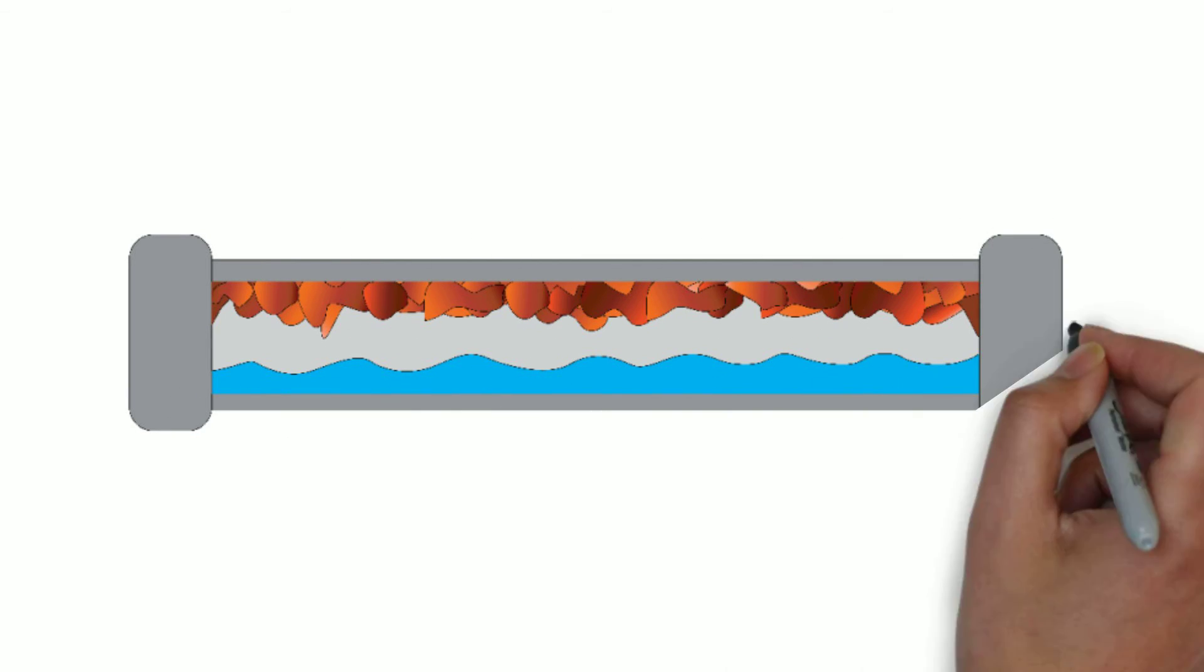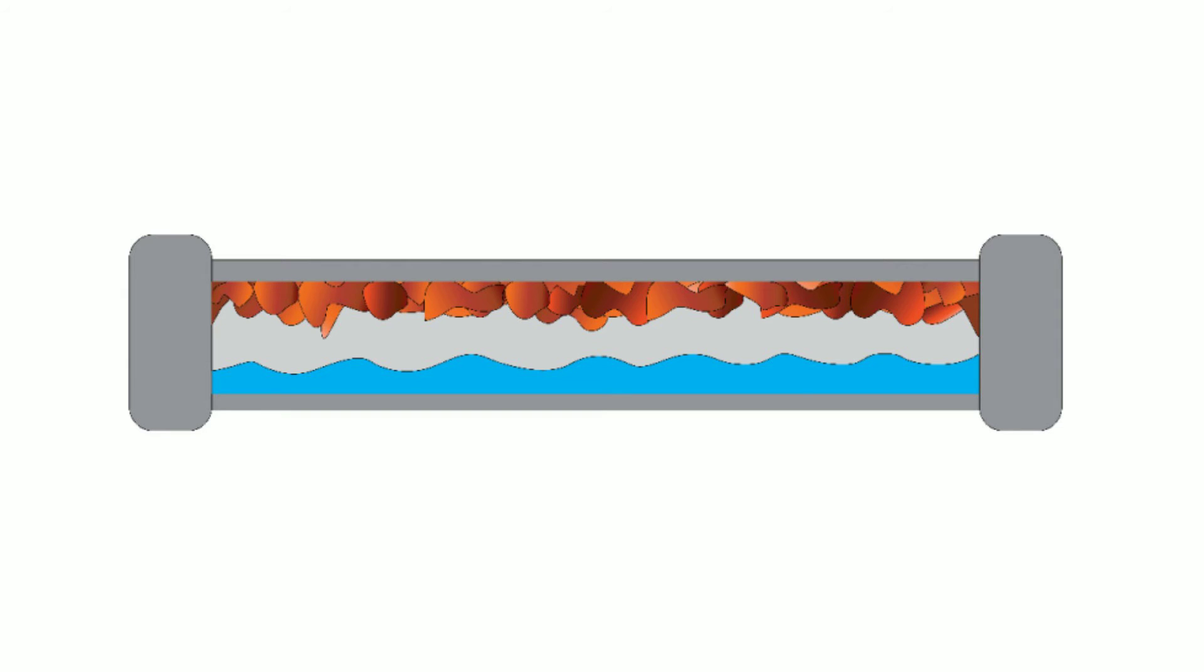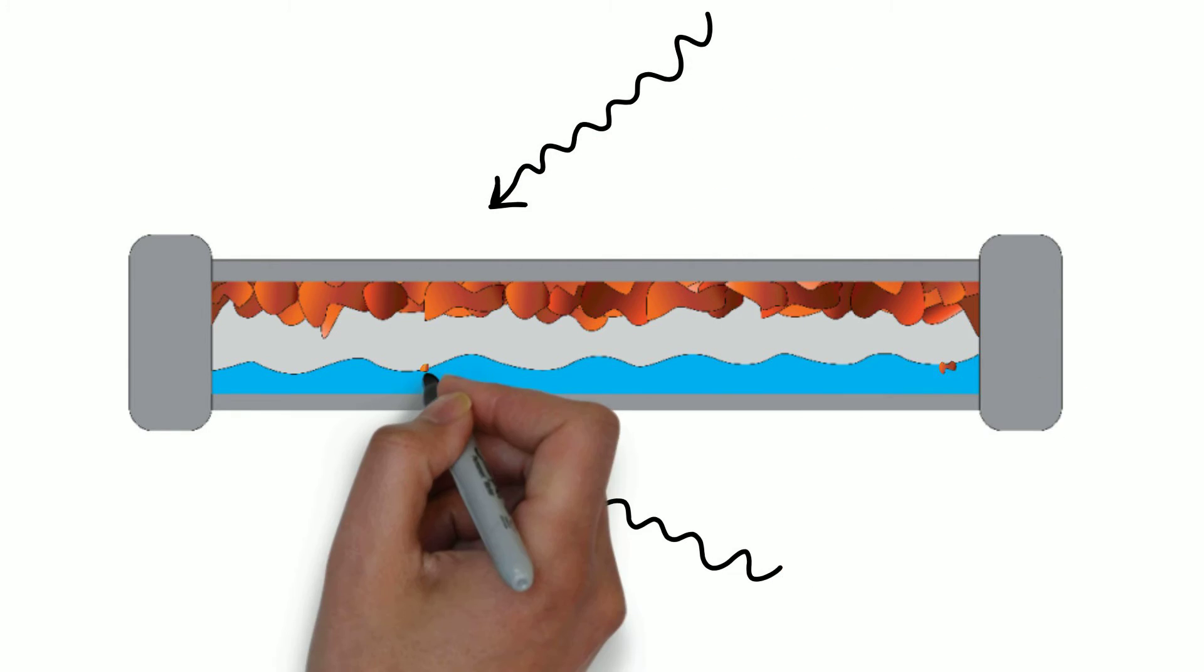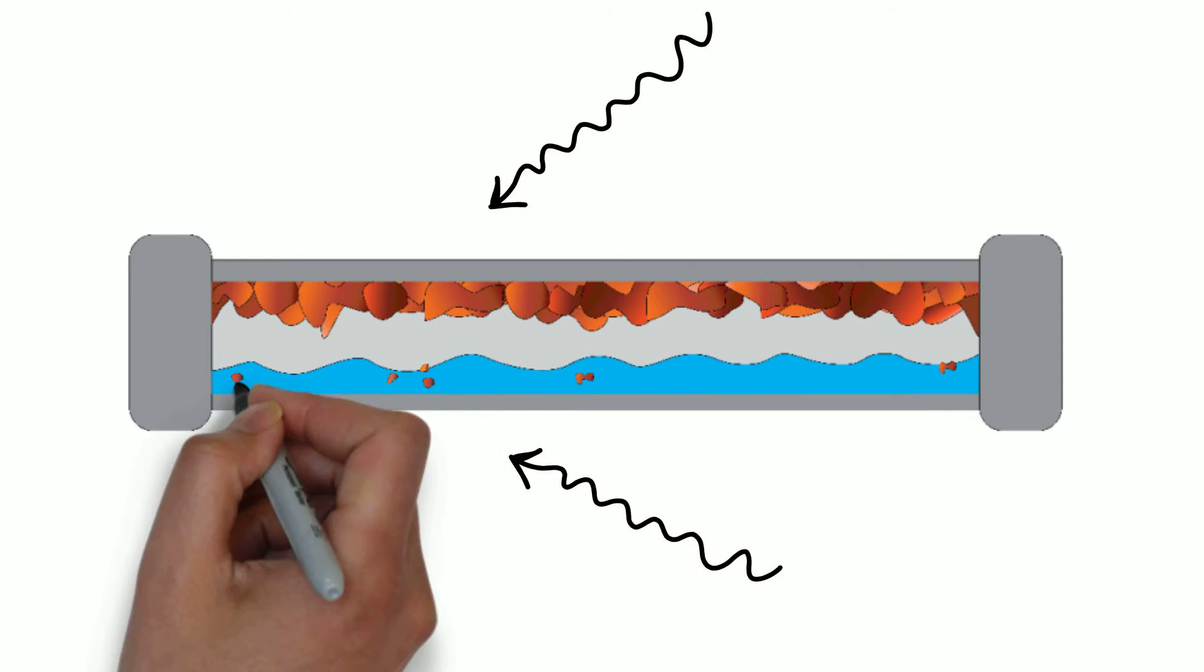And when cities start to replace their pipes, that process can create vibrations from construction, causing more flakes of the corroded pipe to enter the water supply.